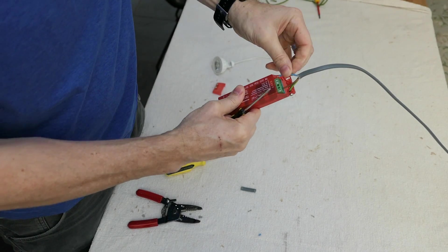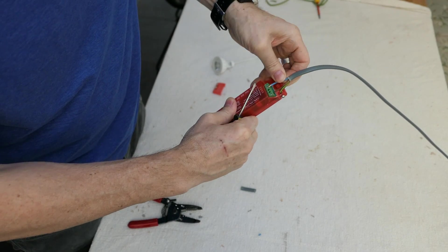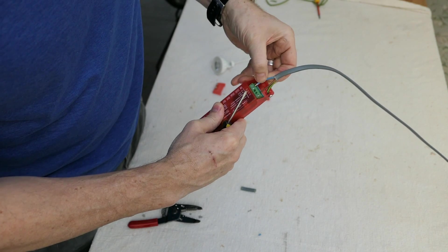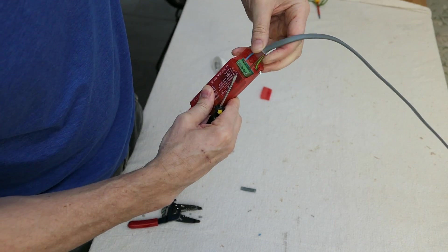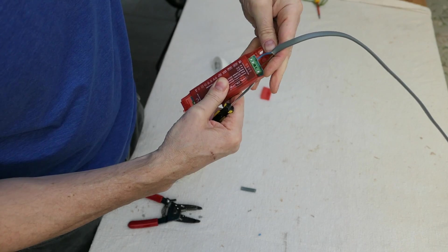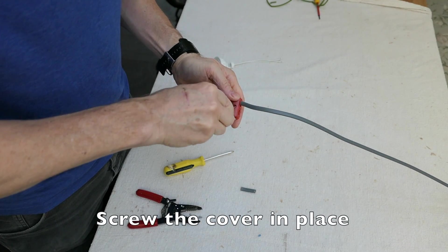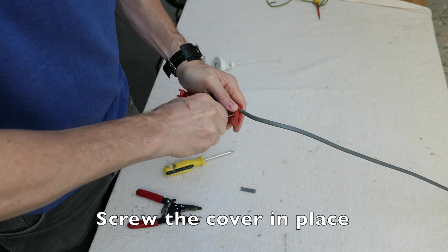The neutral is then fixed into the section marked N. Firmly tighten. Then fix and tighten the cover to hold the wires firmly in place.